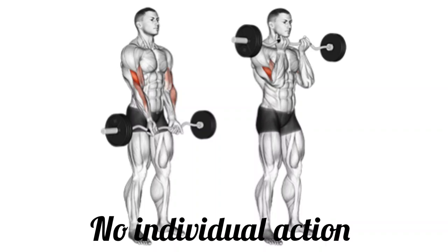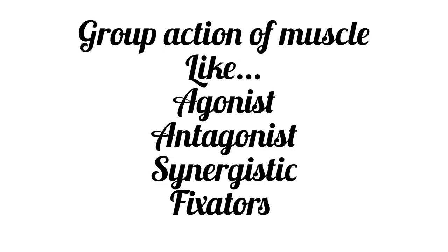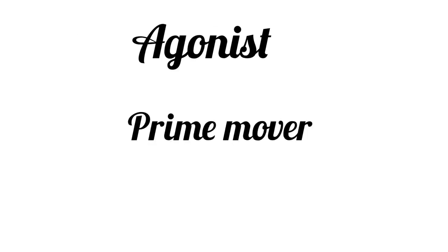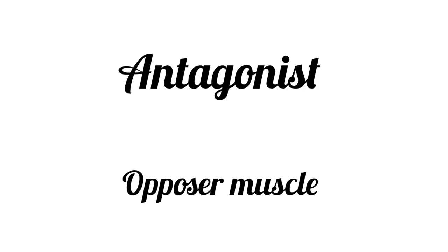In our body there is no individual action of a muscle — there is always a group action of muscles. In this video we are going to discuss group action of muscles. The first one is the agonist, also called the prime mover. Agonists are the muscles which are the main movement muscles, while the antagonist is the opposer muscle, or the muscle opposite to the agonist in its action.